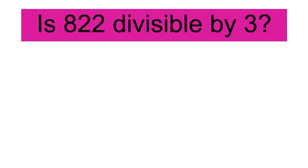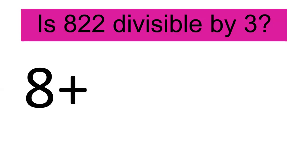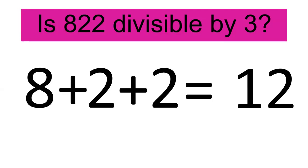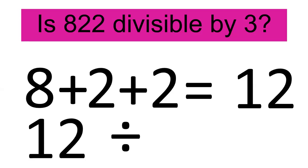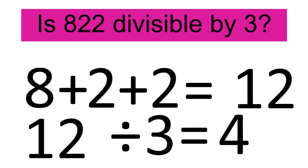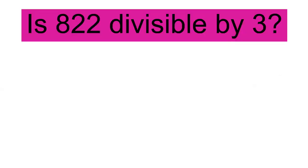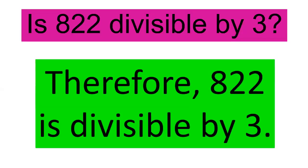Another example to make it clear. Is 822 divisible by 3? Add the digits again: 8 plus 2 plus 2 equals 12. Then, 12 divided by 3 equals 4. Therefore, 822 is divisible by 3.